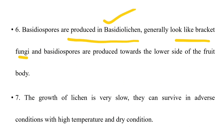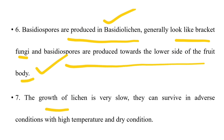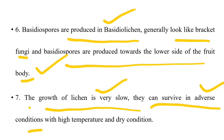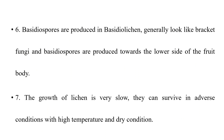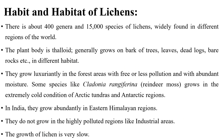Basidiospores are produced in basidiolichens, which look like bracket fungi, and are produced towards the lower side of the fruiting body. The growth of lichen is very slow; they can survive in very adverse conditions including high temperature and dry conditions.